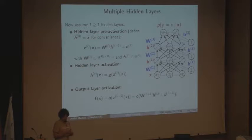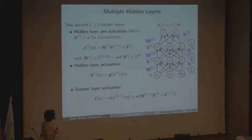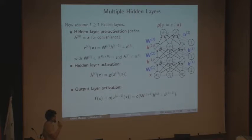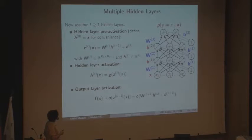That small detour was to explain what happens with multiple classes in the output layer. Going back to neural networks in the general case — instead of just one hidden layer, we can have multiple hidden layers: h1, h2, and more. The story is the same: for every layer we have a pre-activation Z as an affine function of the input to that layer, which is the activation from the previous layer. The input to h2 is the representations computed in h1. Then we apply a nonlinearity to all these pre-activations.